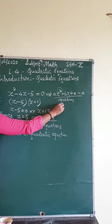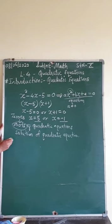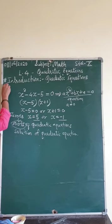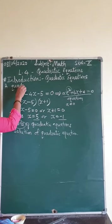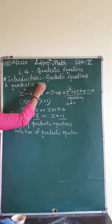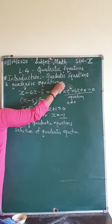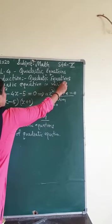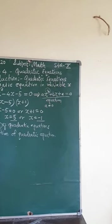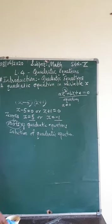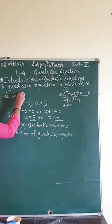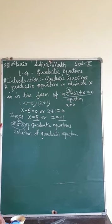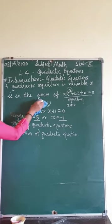These roots are also known as the solution of the quadratic equation, which is ax² + bx + c. When you equate it to 0, we get an equation, and this equation is nothing but the quadratic equation, because the highest power of variable x is 2. And that's why here a should not be 0. So the quadratic equation in variable x is in the form ax² + bx + c = 0.